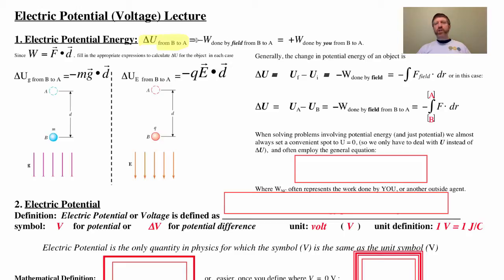But in general, any change in potential energy is simply the opposite of the work done by the conservative field from B to A. So the change in electric or in any potential energy from B to A is the opposite of the work done by the field.